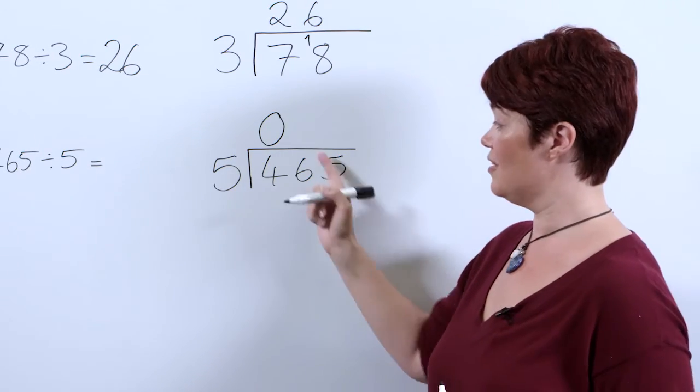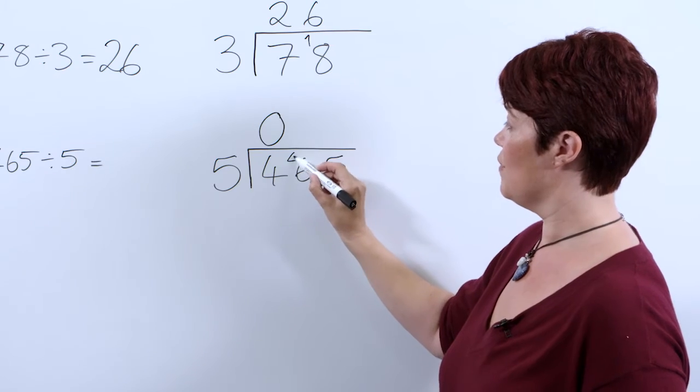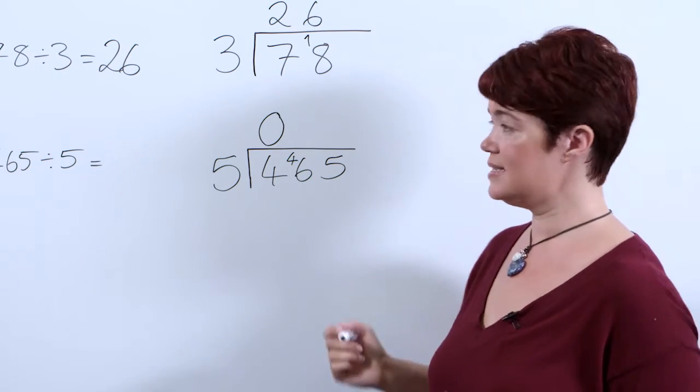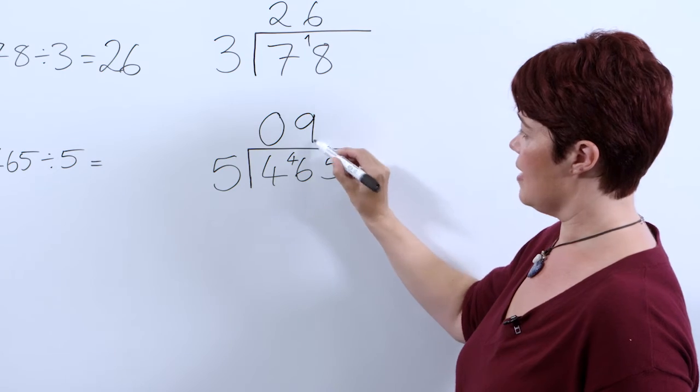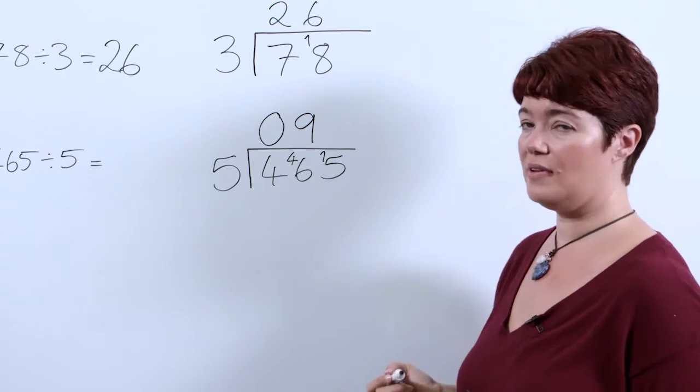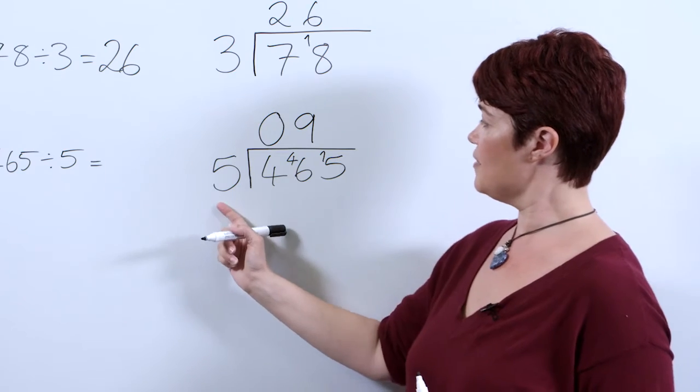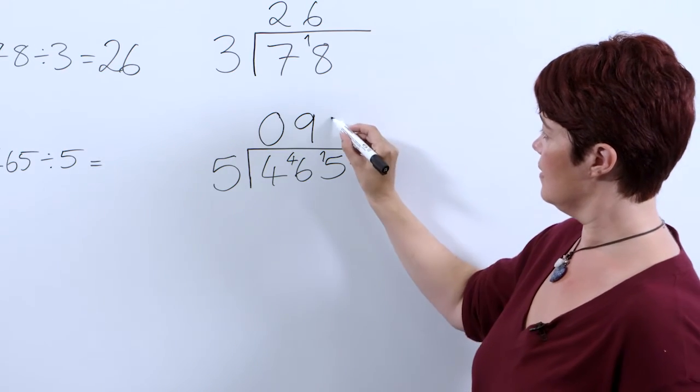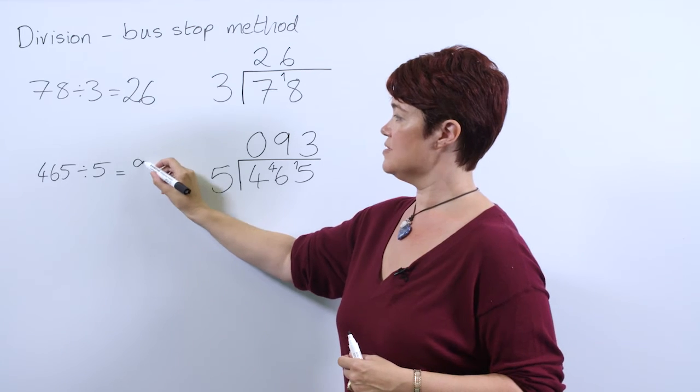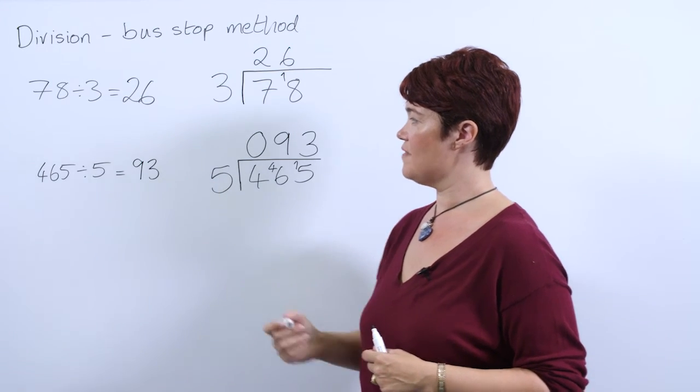We're going to exchange our hundreds for tens, so this becomes 46 tens. How many groups of 5 can we take from 46? That will be 9 groups of 5. Again we've got one 10 left over, we exchange it, it goes into our ones column. How many 5s can we take from 15? That will be 3. So there we have our answer: 465 divided by 5 is 93.